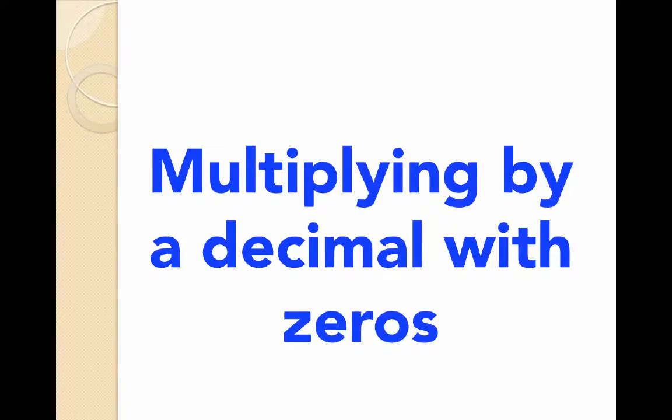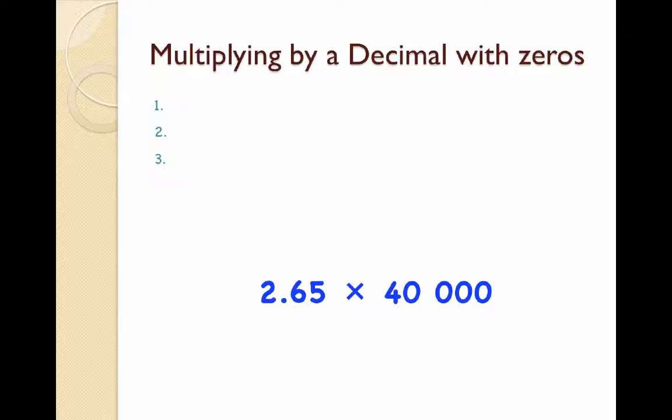So let's take a look at how to do that. What do I mean by a decimal with a couple of extra zeros? Well, this example that's on your screen right now, 2.65 times 40,000, is exactly what I'm talking about. I'm going to show you a good way of multiplying these two numbers together in order to get our correct answer.